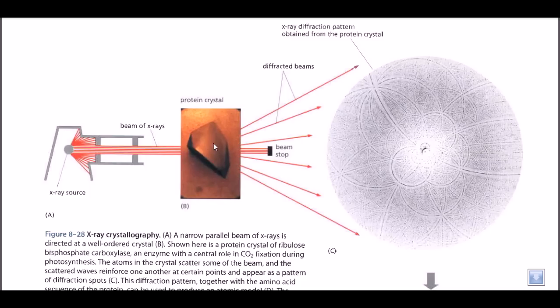Suppose we have an unknown protein. We don't know the structure of the protein, so what we can do is take that protein, crystallize it, and after making a crystal of that protein, we do this crystallographic study. After the crystallographic study, we can tell what exactly the structure of the protein is.